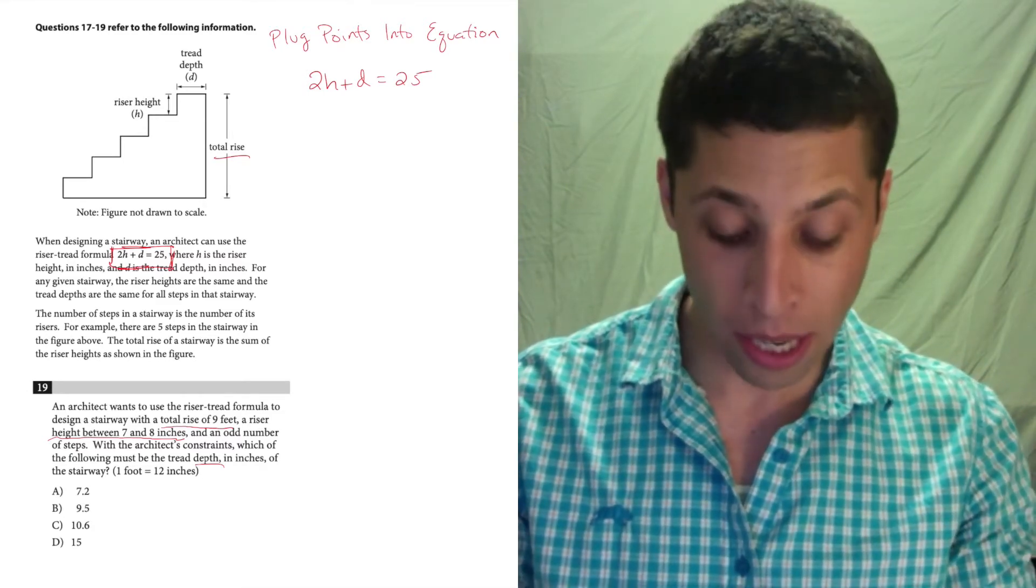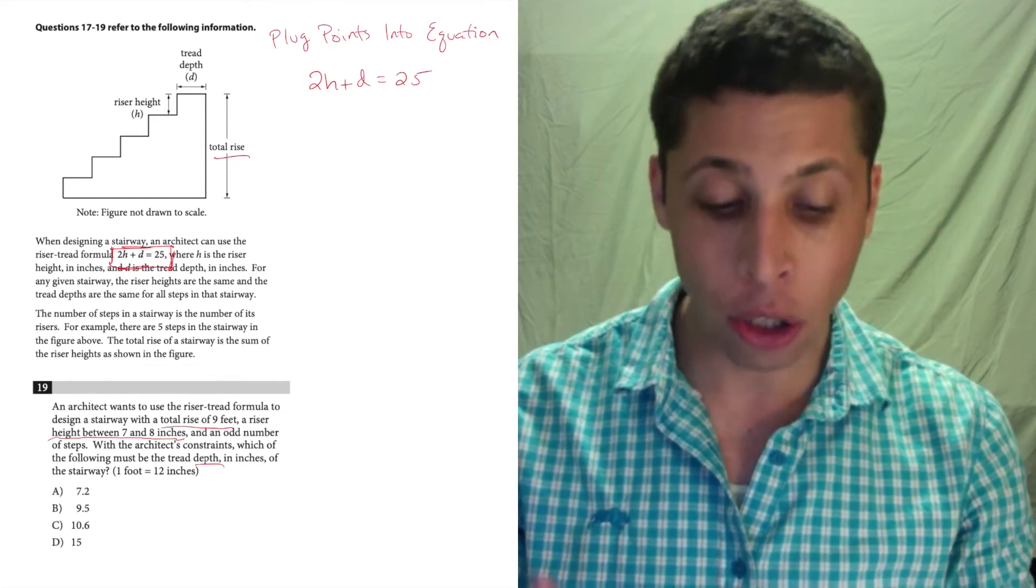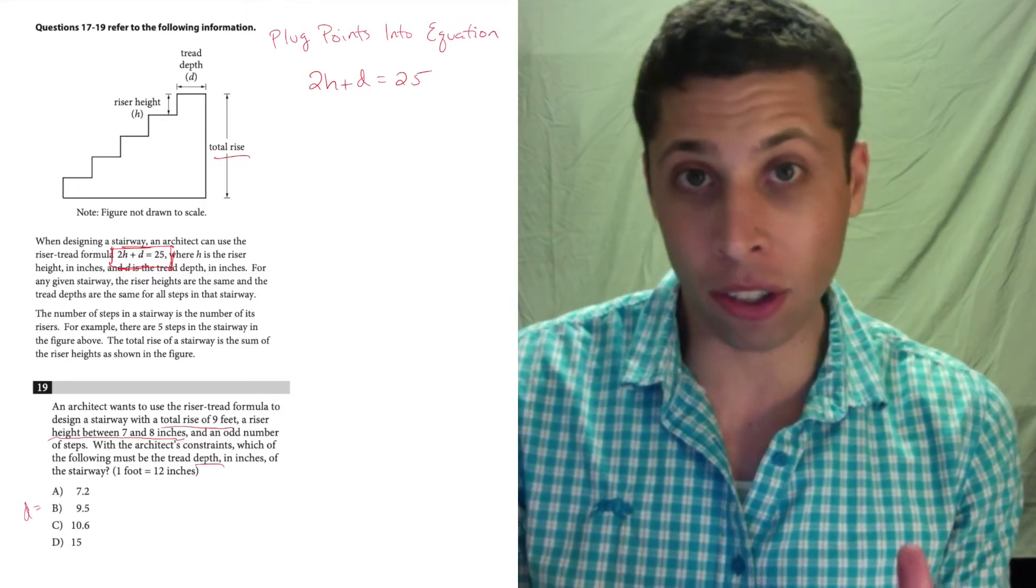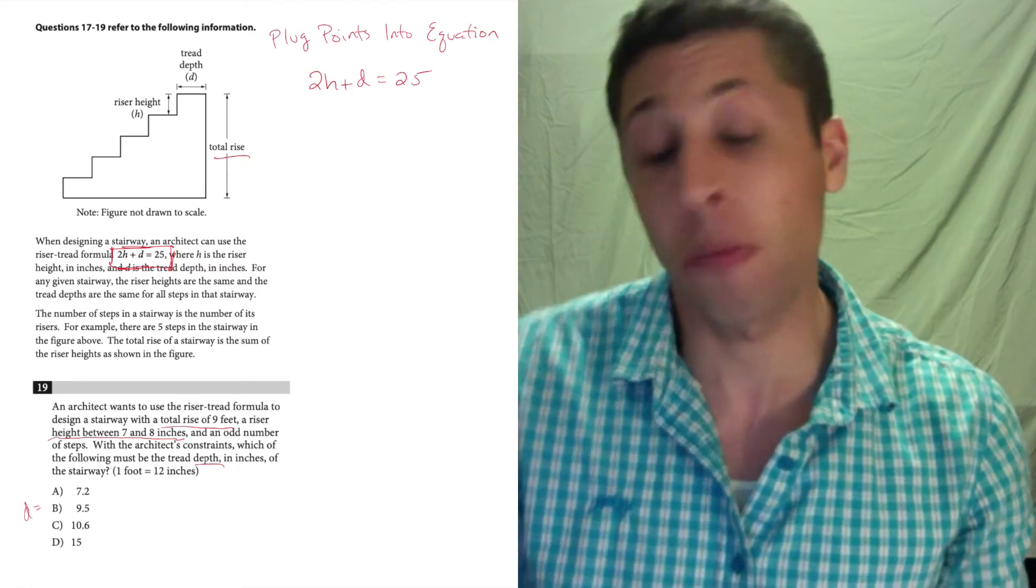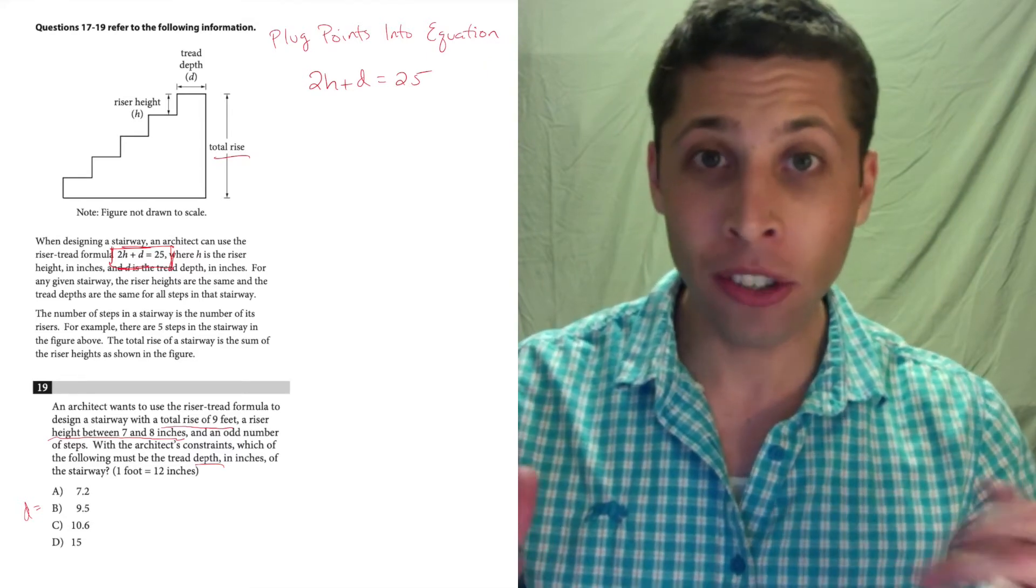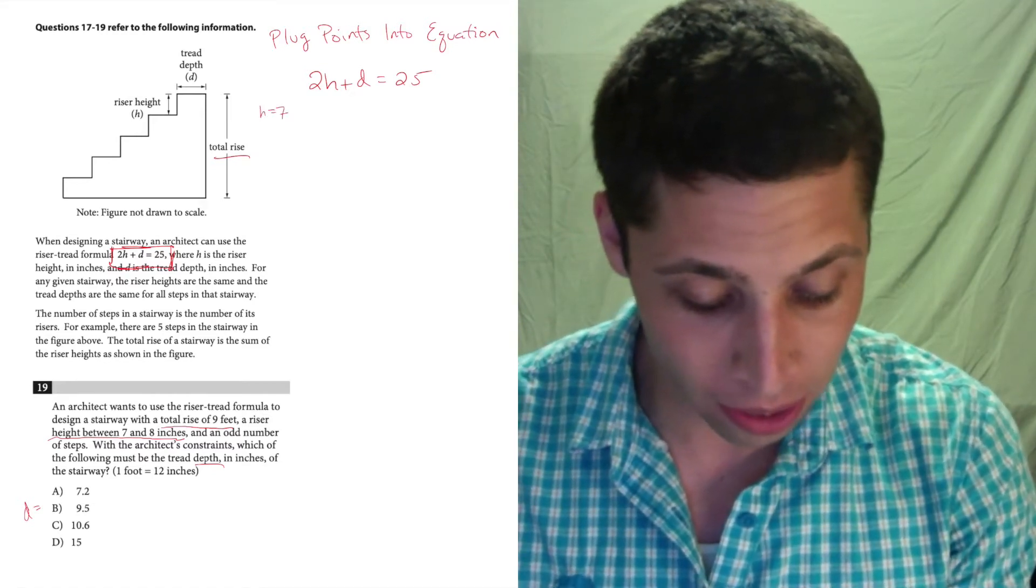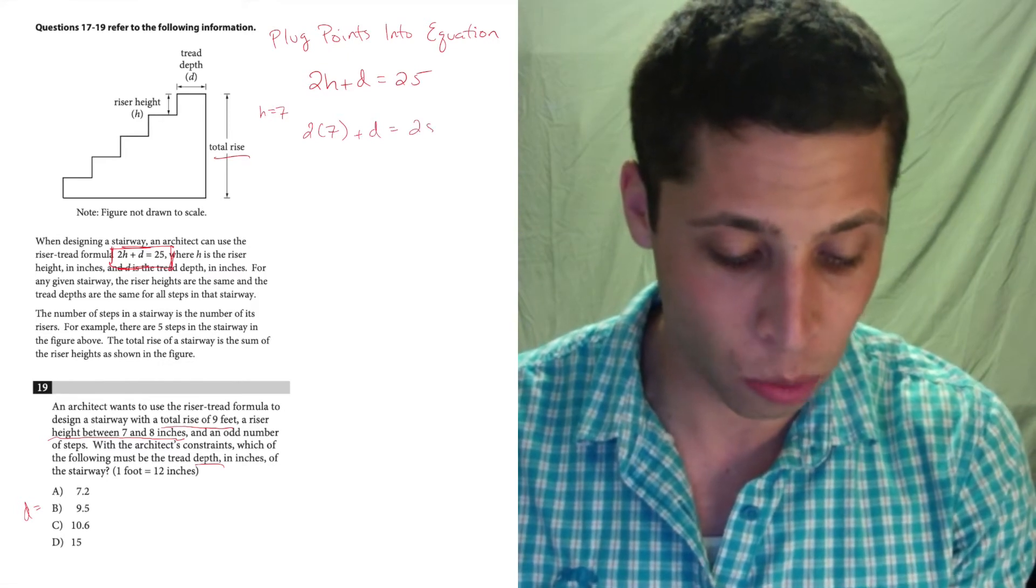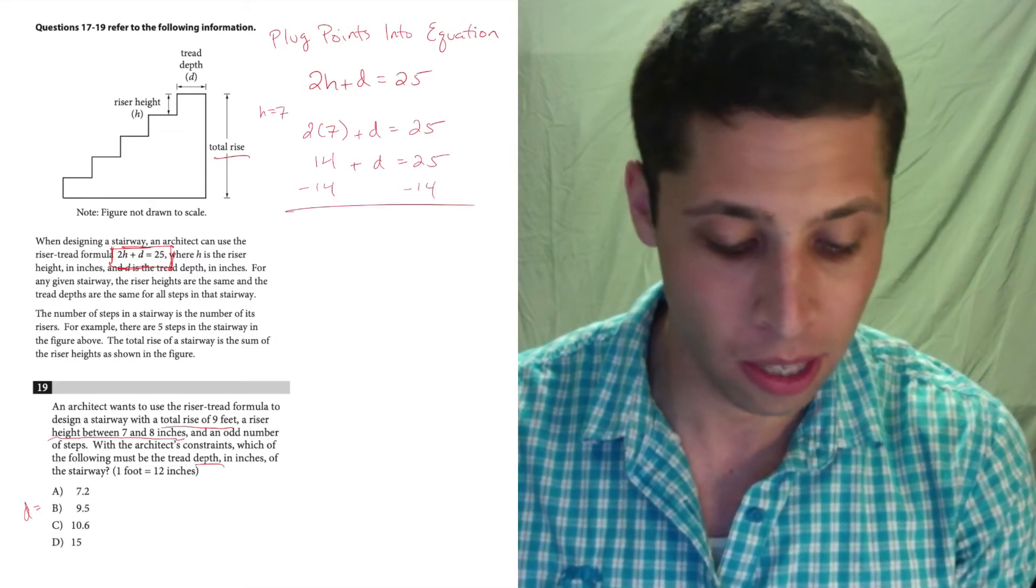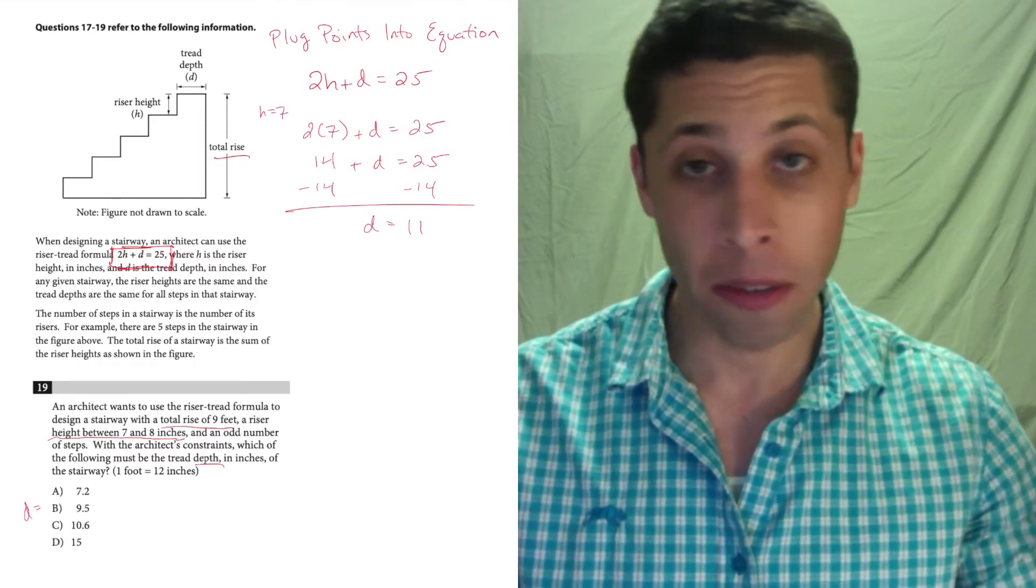The easiest thing I would do is just kind of play with the height because 7 and 8 are kind of easy numbers. If I look at the answer choices for the depth, I could kind of guess and check with these, but some of them are really messy. So let's just see what that does. Let's put 7 in for h. So if h is equal to 7, we have 2 times 7 plus d is equal to 25. 14 plus d is equal to 25, subtract 14, and we get that d is equal to 11.